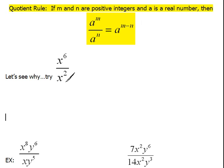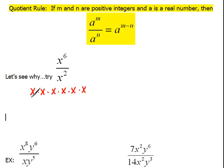Now let's see why this works. If we were to write out what x to the 6th truly means, that means x times x times x times x times x times x — six of them — over x squared, which would be x times x.